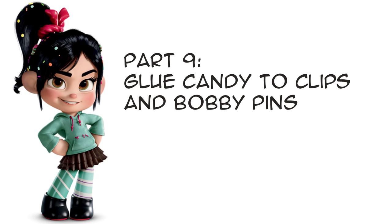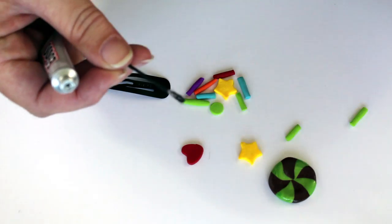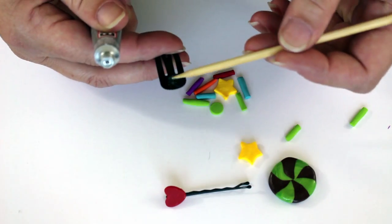Part 9: Glue candy to clips and bobby pins. Once all of your pieces are baked and cooled, glue them to the hair clips and bobby pins using a strong glue like E6000.